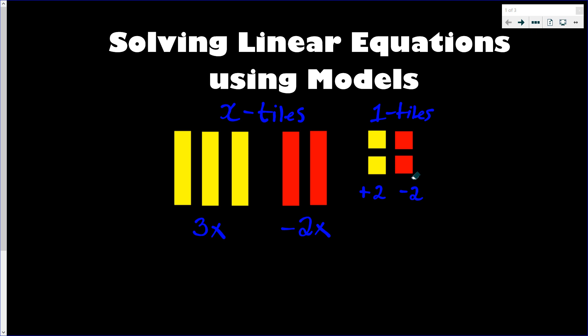Any time you have the opposite color tile, like a red and a yellow or yellow and red, that represents a zero pair. So these would cancel each other out because they're exactly the opposite. It's like if you have one and then you take away one, you have nothing, so they cancel out. So those are called zero pairs.